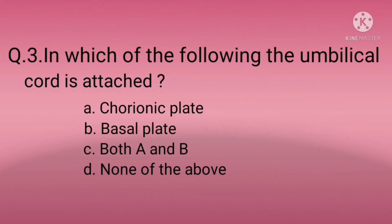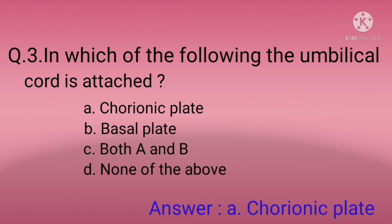Question three: To which of the following is the umbilical cord attached? Option A: Chorionic plate, Option B: Basal plate, Option C: Both A and B, Option D: None of the above. The correct option is A — chorionic plate, because the chorionic plate is the fetal surface and the basal plate is the maternal surface.